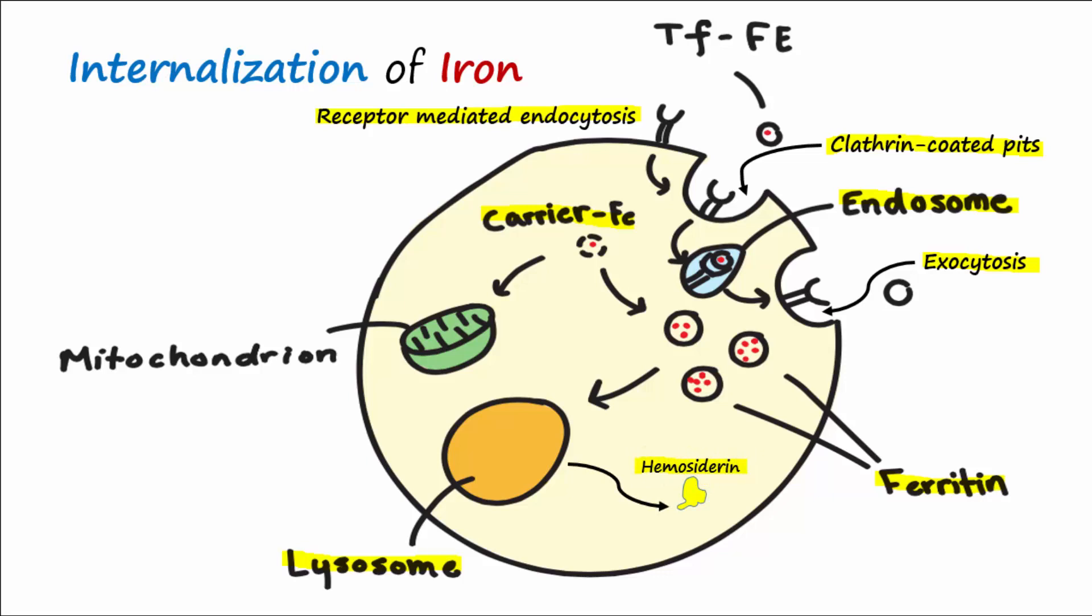Inside the cell, carrier iron, ferritin, and hemosiderin are all in equilibrium.